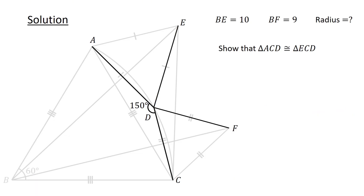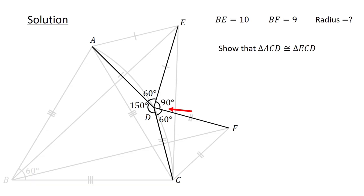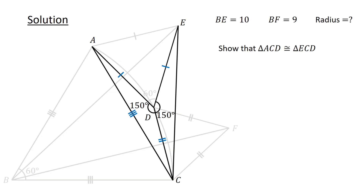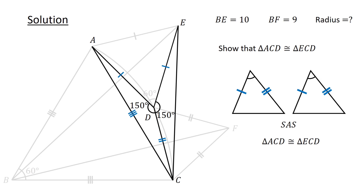Next, consider these four line segments. Angles ADE and FDC are interior angles of equilateral triangles and each equals 60 degrees. Angle EDF equals 90 degrees. Since AD equals ED, CD is common to both triangles, and the included angles are equal. By the SAS congruency test, the two triangles are congruent.